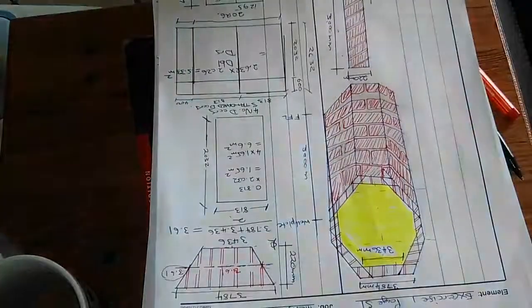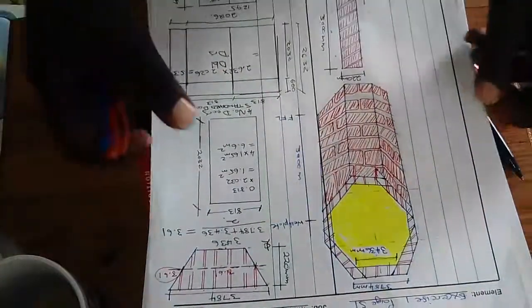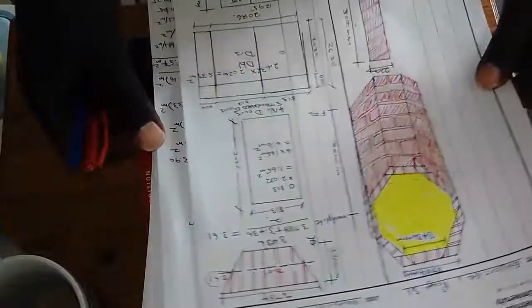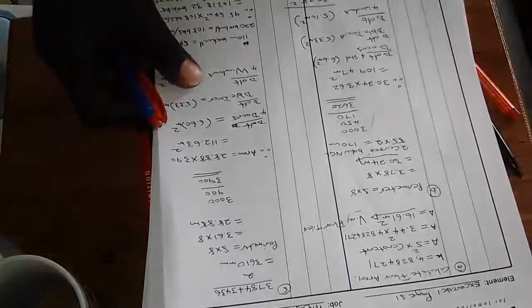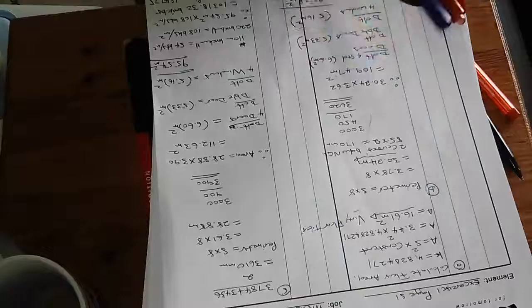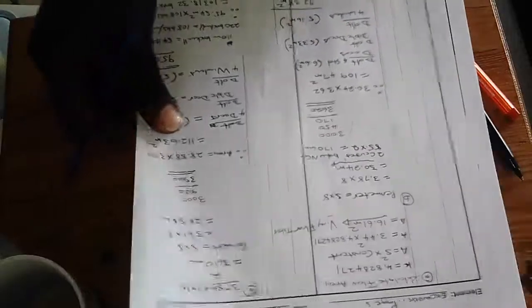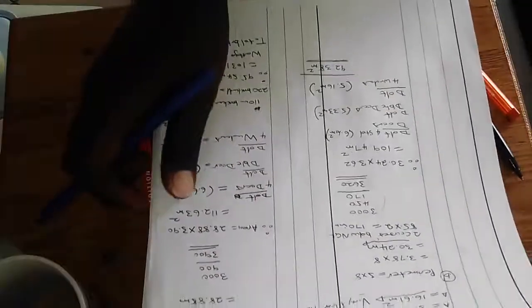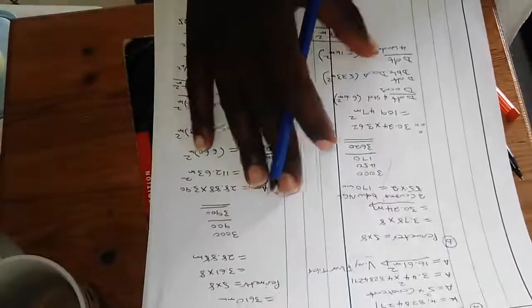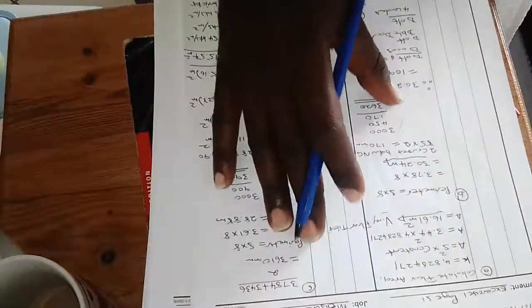So guys, now we need to calculate the net number of bricks. For the net number of bricks, we need to ascertain what is the center line that we need to employ.